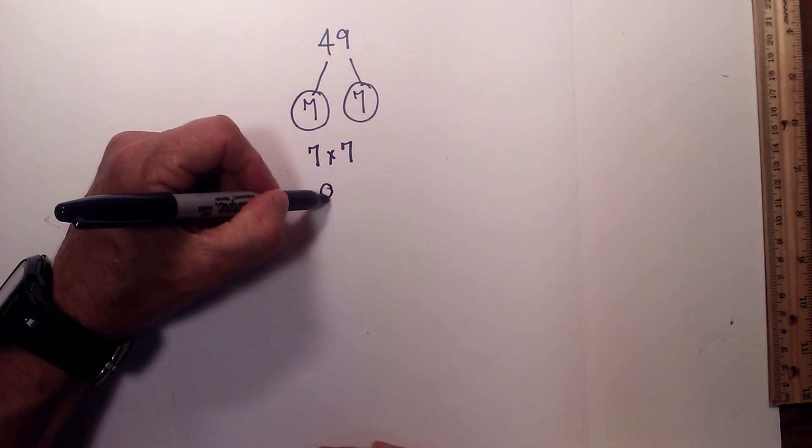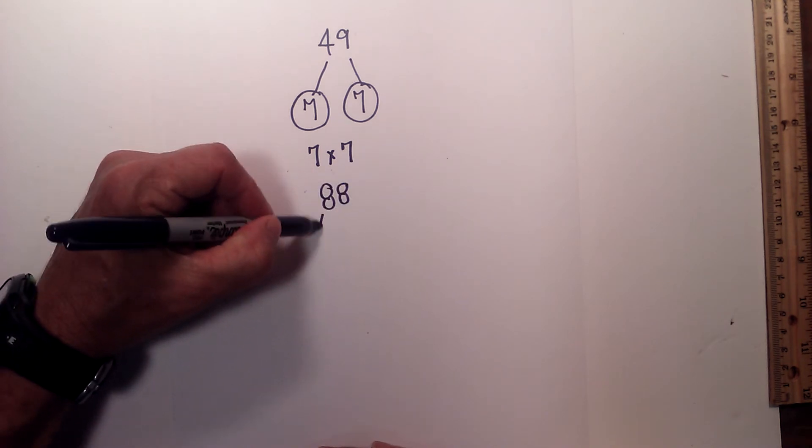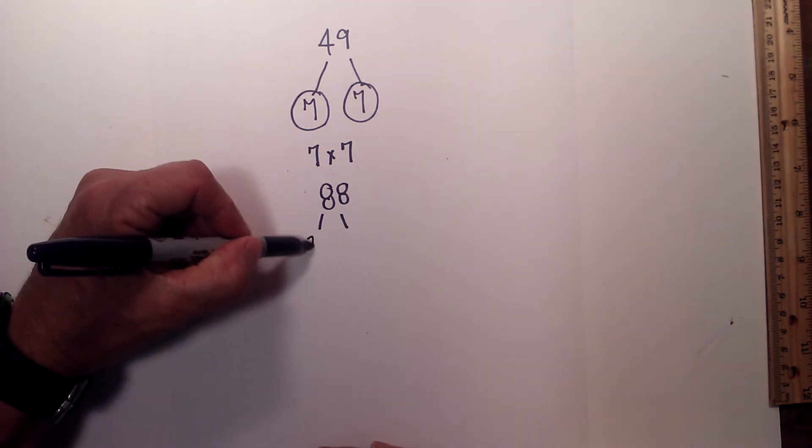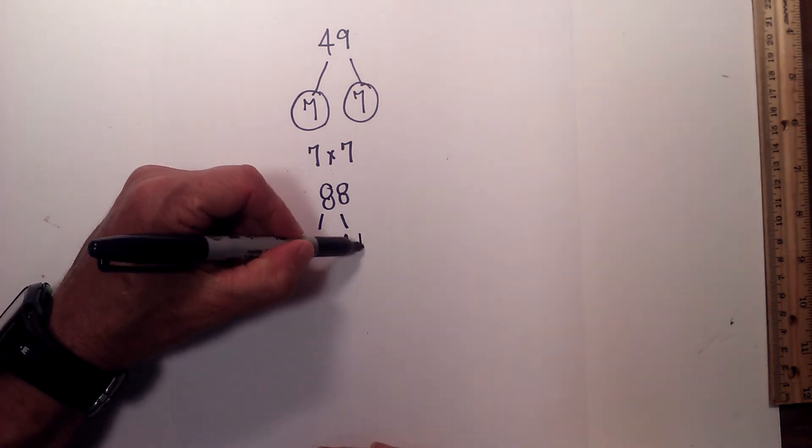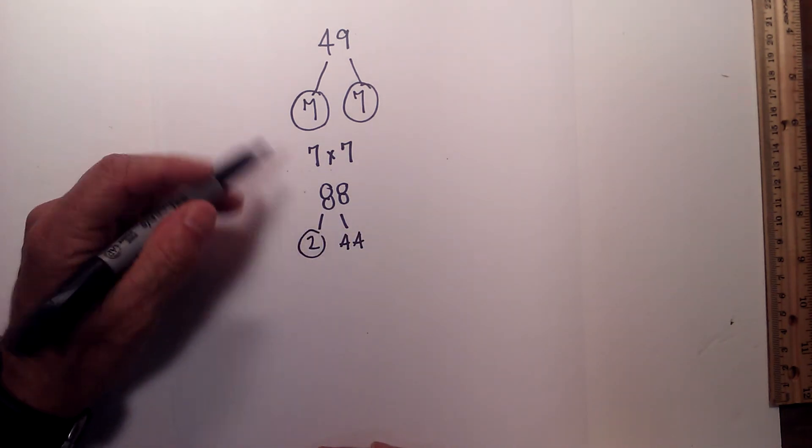Now let's look at 88. I will begin with 2 times 44. Circle the 2 because it is prime.